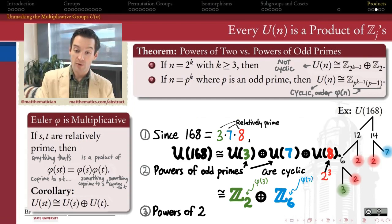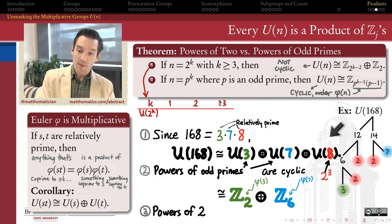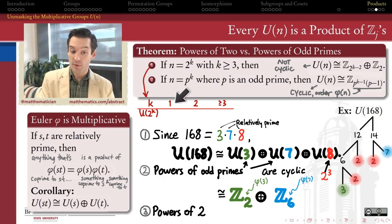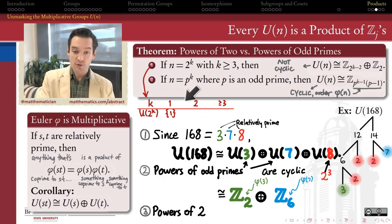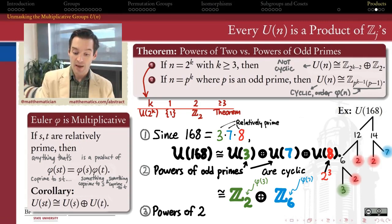Applying that to U(8): U(8) is isomorphic to Z mod 2^(3−2) × Z mod 2, which simplifies to Z₂ × Z₂. This theorem doesn't cover the cases k=1 and k=2, but we can handle those separately: U(2) is a trivial group (cyclic of order 1), and U(4) has only two elements — 1 and 3 — so it's isomorphic to a cyclic group of order 2. All powers of 2 greater than or equal to the third power use this theorem.